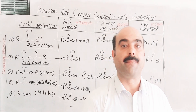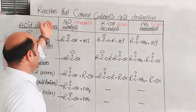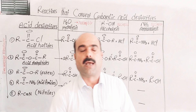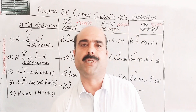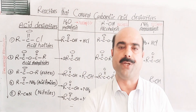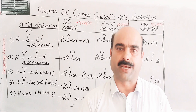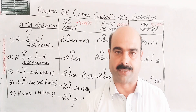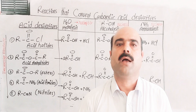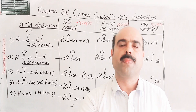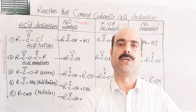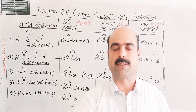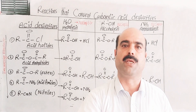This last topic is the conclusion — the summary of the chemical reactions that convert carboxylic acid derivatives. I am going to discuss the summary in table or form format, covering how one carboxylic acid derivative can be converted into another derivative.